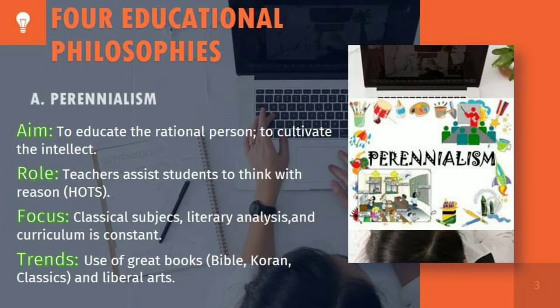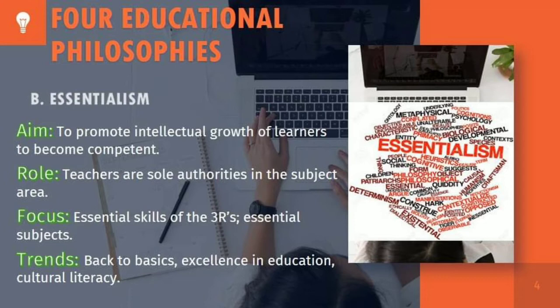Let us now look at the four educational philosophies and how they relate to curriculum. First is perennialism. Perennialism draws from both idealism and realism. Education must therefore pursue perennial truths — truths that are absolute and universal. The philosophy supposes that there are permanent studies and knowledge available, particularly from the great books, which should be taught to all students.